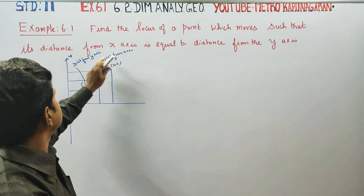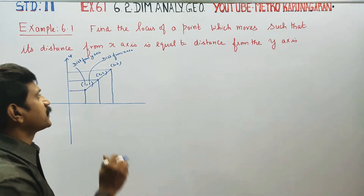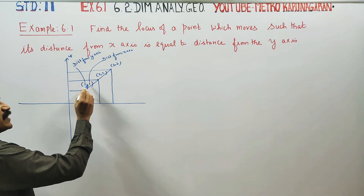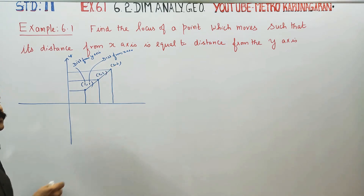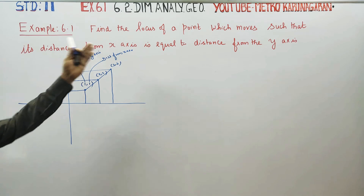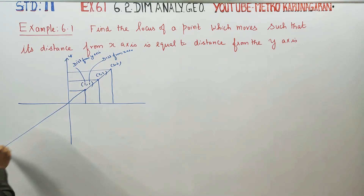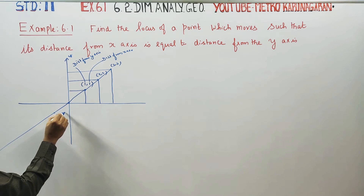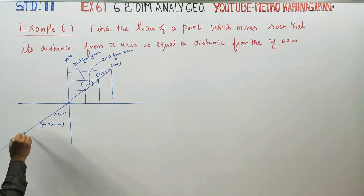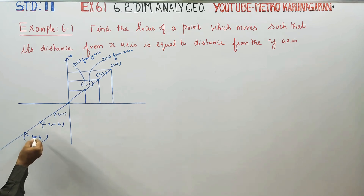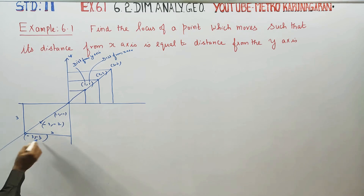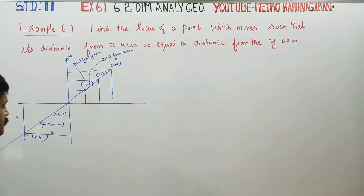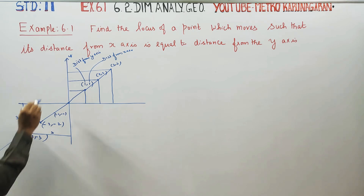If you consider a point like (3,3), the distance from x-axis is equal to the distance from y-axis. Distance from x-axis equals distance from y-axis — that is the condition. Distance from y-axis is equal to distance from x-axis.